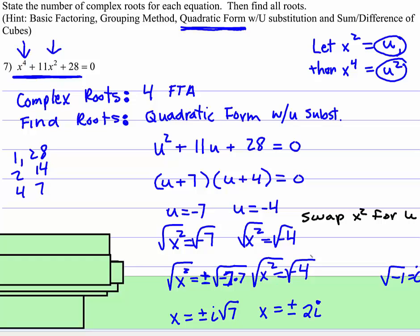And over here, you could rewrite that as negative 1 times 4. The square root of negative 1 is going to be positive and negative i. The square root of 4 is 2. So those are your two roots.